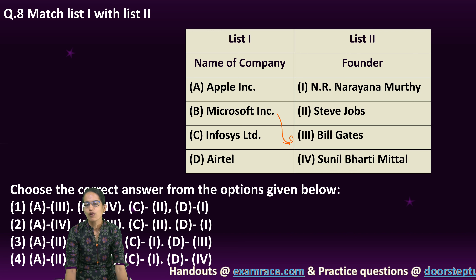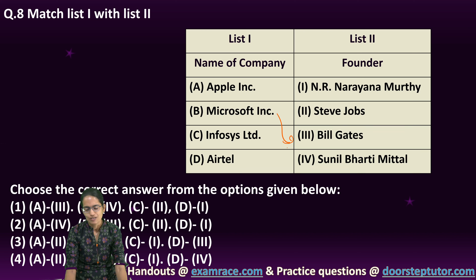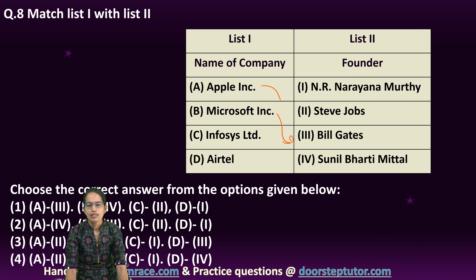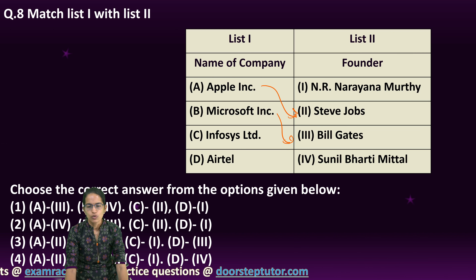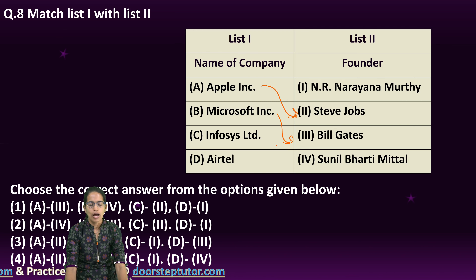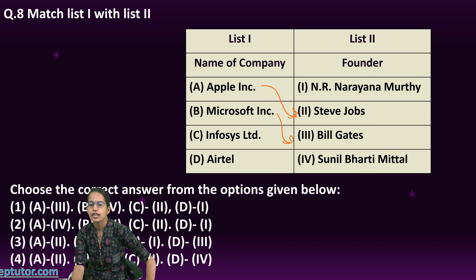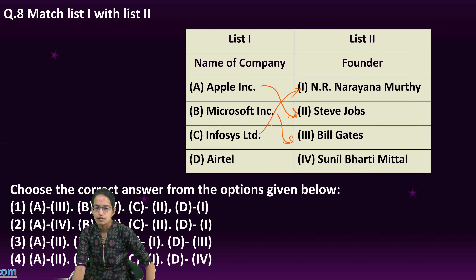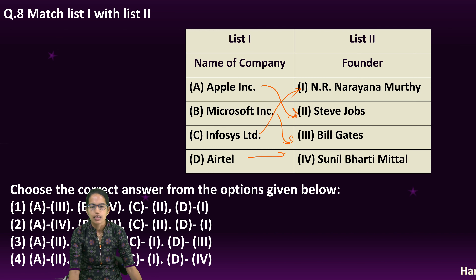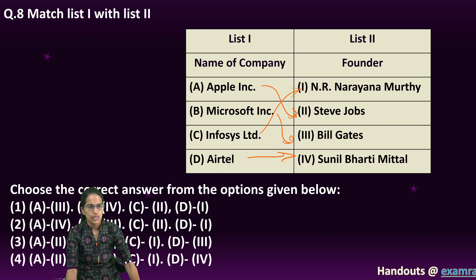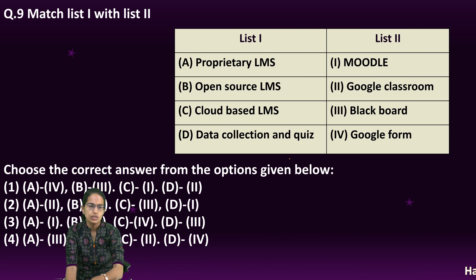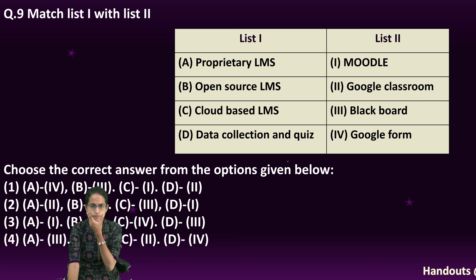The next question is about companies and their founders — more from general knowledge than computers. Microsoft was founded by Bill Gates, Apple by Steve Jobs. Infosys was founded by Narayana Murthy, and Airtel by Sunil Mittal. Those are the correct options.